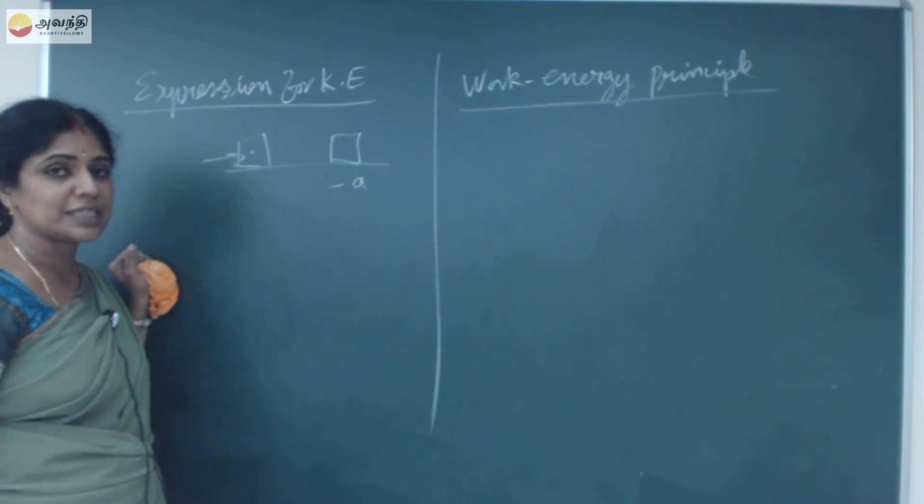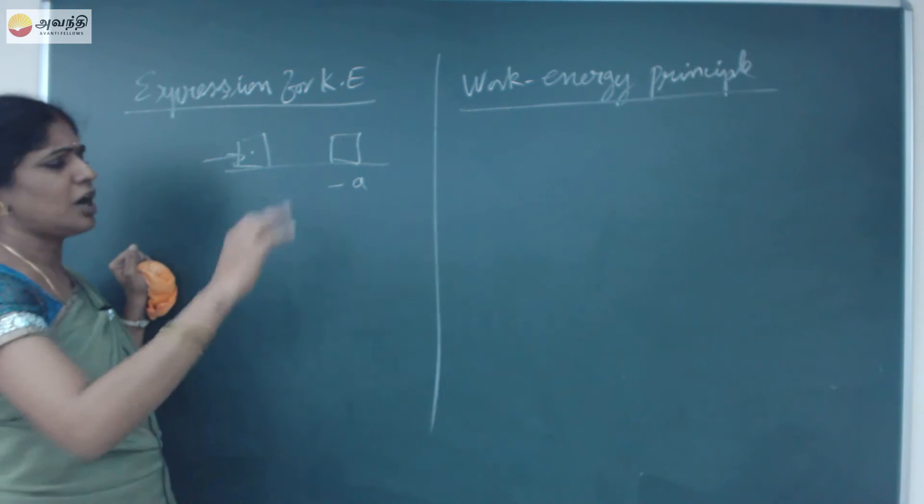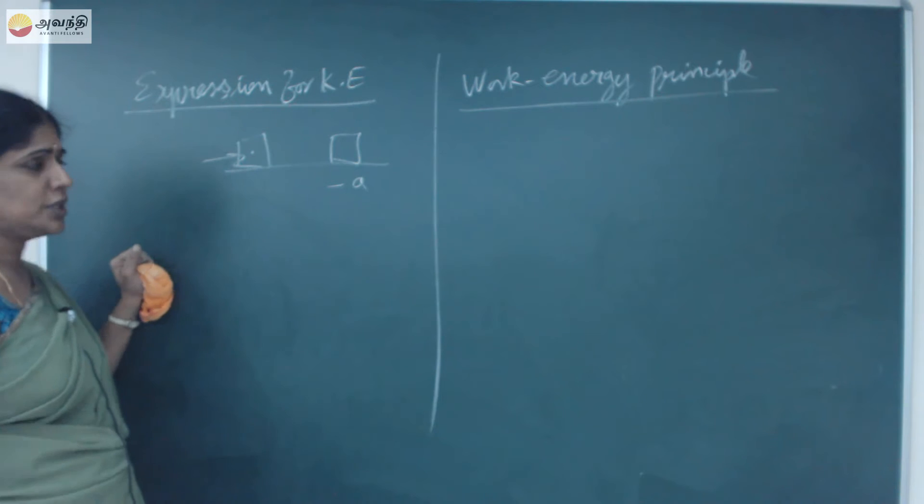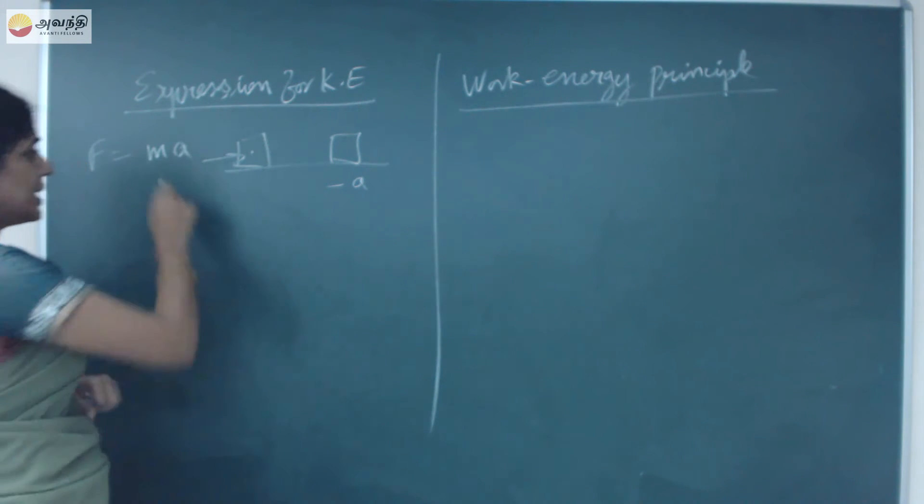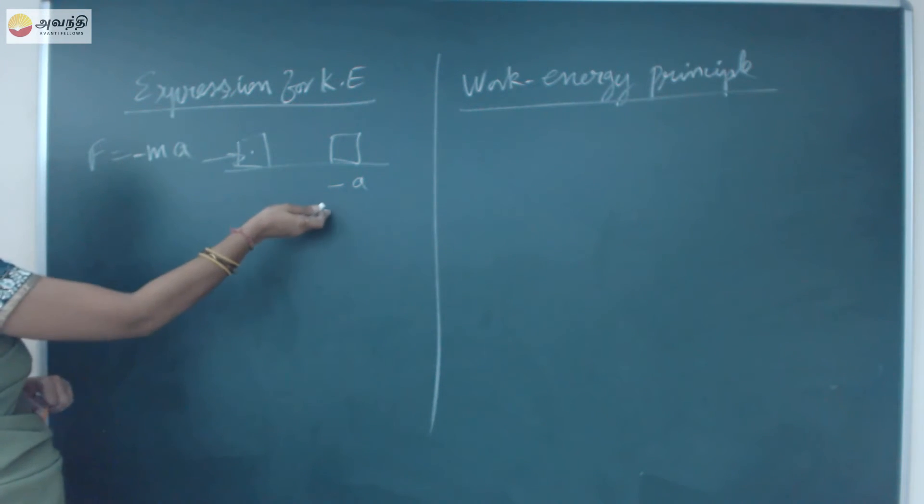When velocity decreases with respect to time, we call it as negative acceleration or retardation. So one object has negative acceleration. Then by Newton's second law, we know that F is equal to M into A.